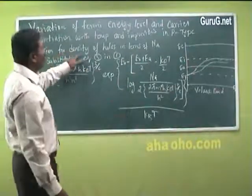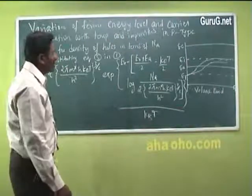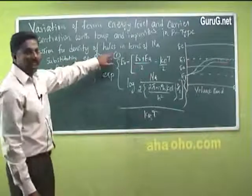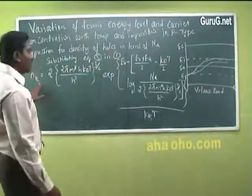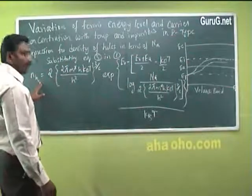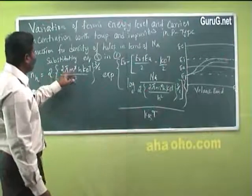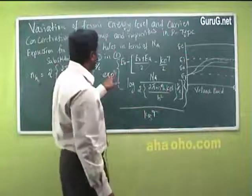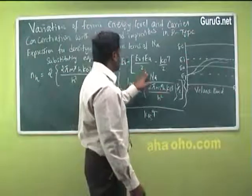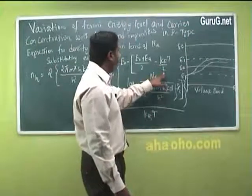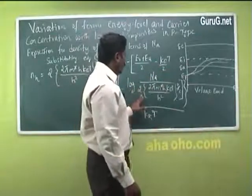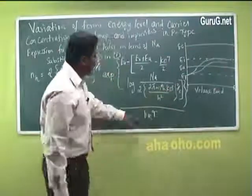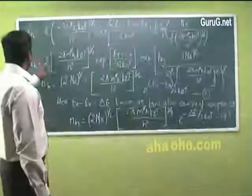The expression for density of holes in terms of NA, that is the acceptor energy level: substituting equation 5 in equation 1, we get the density of holes NH equal to 2 into (2 pi M* H KBT / H²)^(3/2) exponential of (EV minus EV plus EA) / 2 minus (KBT / 2) log [NA / (2 into (2 pi M* H KBT / H²)^(3/2))] divided by KBT.